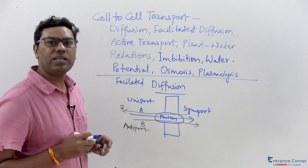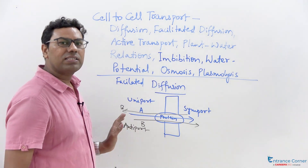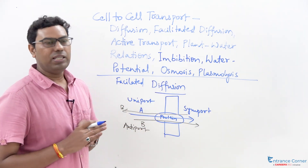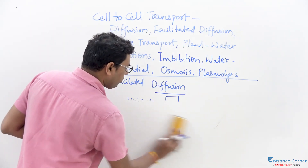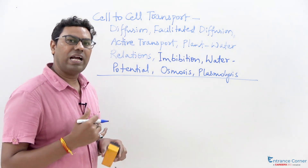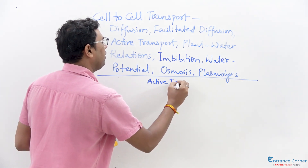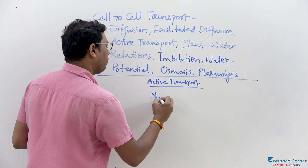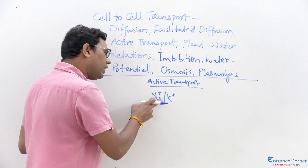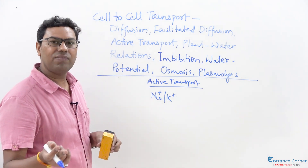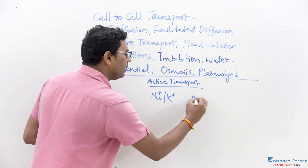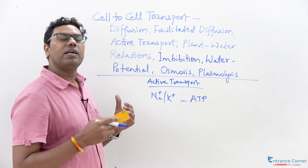Without the utilization of energy, a particular molecule can be transported from one cell compartment to another with the help of transmembrane proteins in the plasma membrane — that is facilitated diffusion. However, if transportation is happening by utilization of a certain kind of energy, that is called active transport. For example, the transportation of sodium and potassium ions across the cell membrane using integral membrane proteins requires energy and is called active transport.